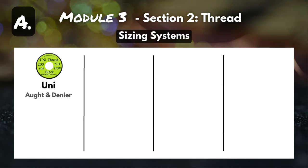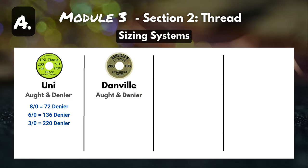Hopefully we're clear on the aught and denier system, because this is where things start to get a little crazy. If we're talking Uni — the brand we just discussed — they use both the aught and the denier system: 8-aught is 72-denier, 6-aught is 136-denier, 3-aught is 220-denier. Now let's say you run out of 6-aught Uni thread and you grab some Danville 6-aught instead. Danville 6-aught is actually 70-denier, so when you're tying with it, it's going to look and behave much more like that 8-aught 72-denier Uni thread.